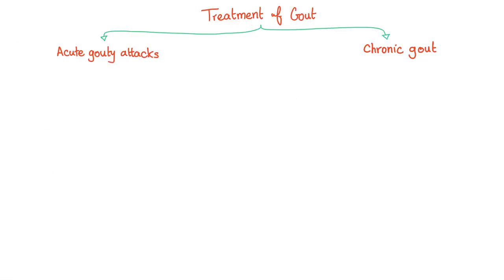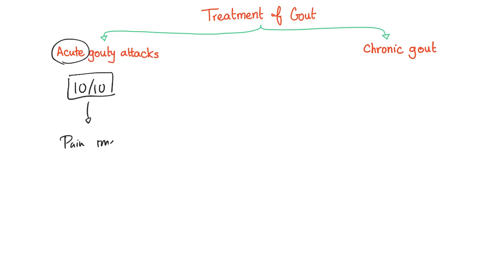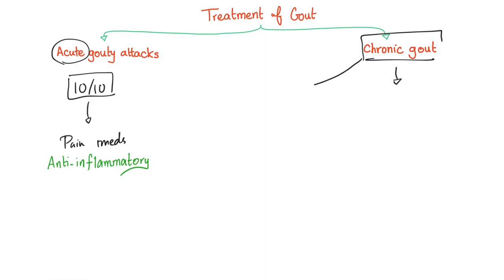Now let's talk about treatment of gout. We have treatment of the acute attack, which is entirely different from treatment of chronic gout. Treatment of the acute attack focuses on pain medications. The purpose of chronic treatment is to prevent future acute attacks — this is prophylaxis — and it aims at decreasing uric acid.